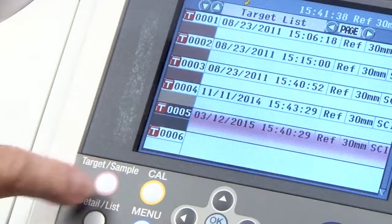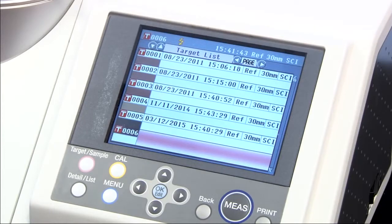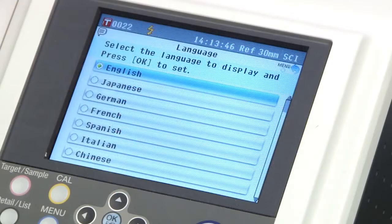In addition to the USB feature, the CM5 can store 4,000 measurements and 1,000 target colors in its large memory. You can even switch language settings.